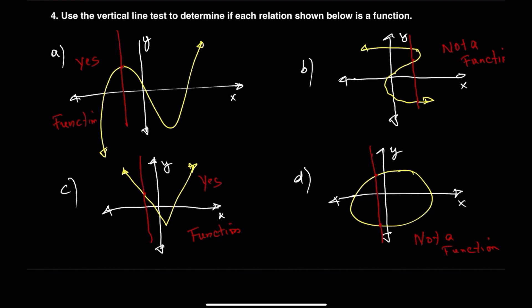In summary, if any vertical line hits a graph more than once, the graph does not represent a function. If it only touches once, then it does. That's it. You've just learned how to analyze relations and determine whether they're functions using ordered pairs, mapping diagrams, tables, and the vertical line test on graphs.